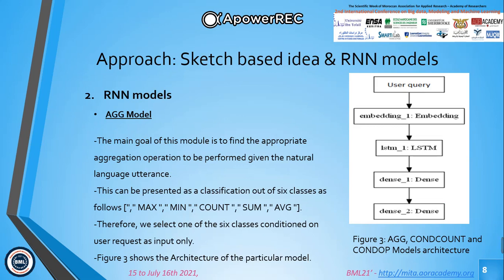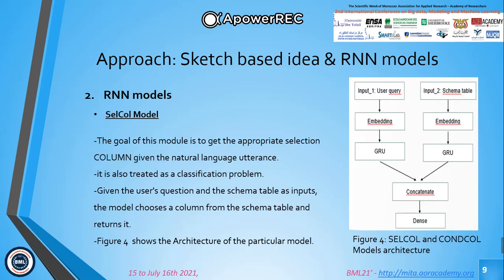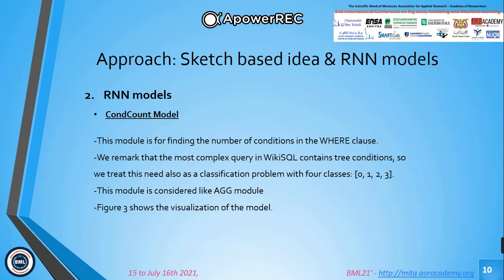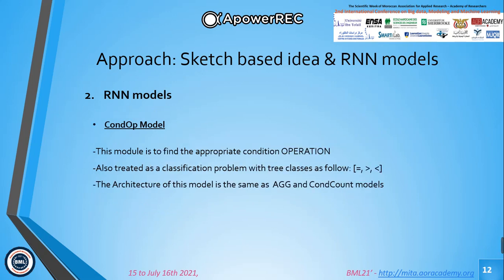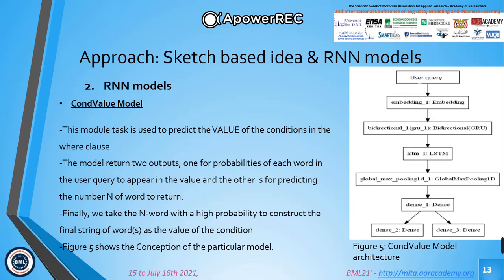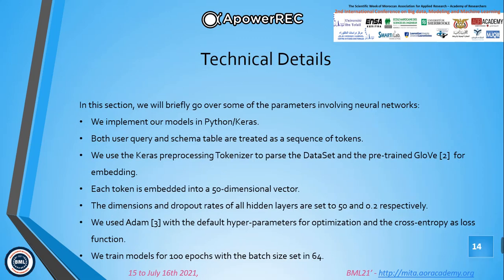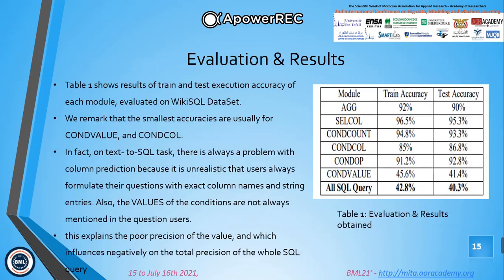We implemented six models based on recurrent neural networks. The first is for predicting the aggregation function, the second for predicting the select column slot, the third for predicting the condition count, the fourth for predicting the condition column, the fifth for predicting the condition operation, and the last for predicting the value of the condition. We used Python with Keras for implementation and achieved about 40% in test accuracy.